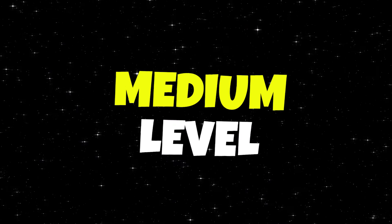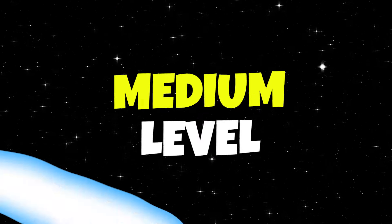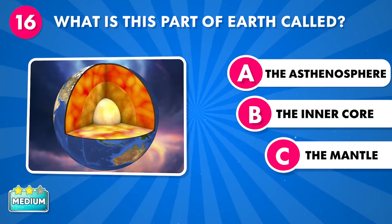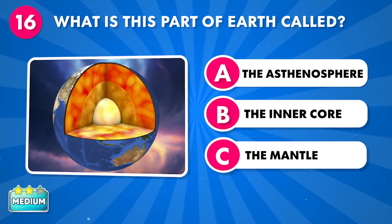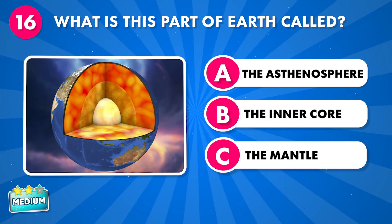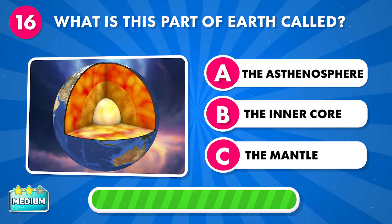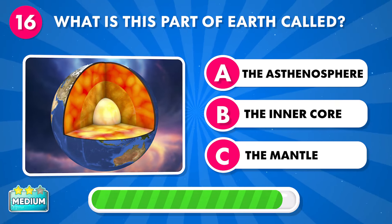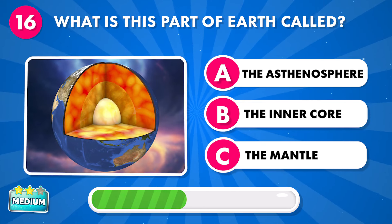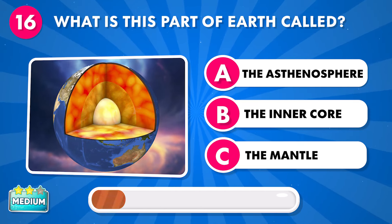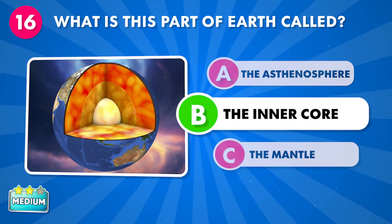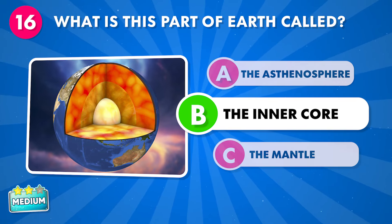Medium level. Are you ready? What is this part of Earth called? A: the asthenosphere, B: the inner core, C: the mantle. It's the inner core.